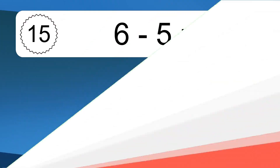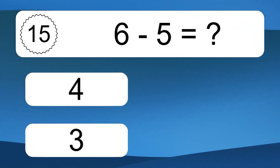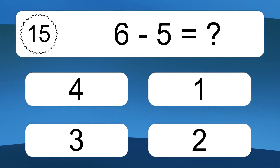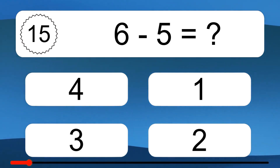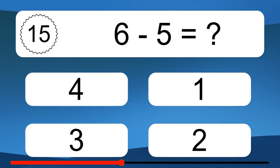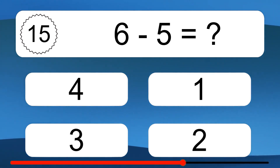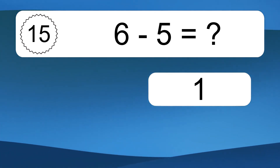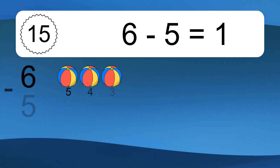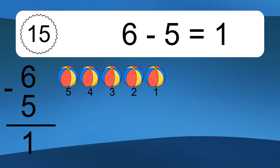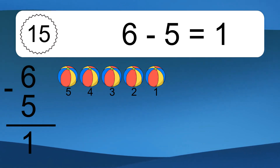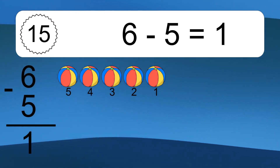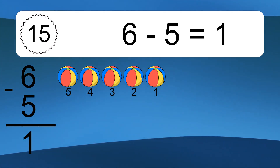6 minus 5 equals what? 6 minus 5 equals 1. Let's count it: 5, 4, 3, 2, 1.